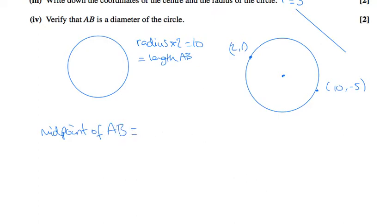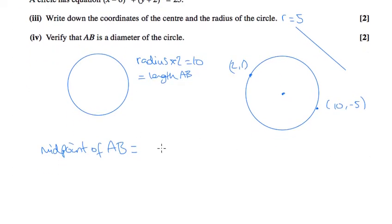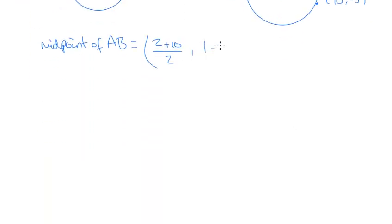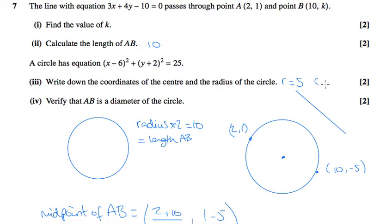And to find the midpoint of a line, we add the x coordinates up and halve them. So that will be 2 plus 10 over 2, and 1 plus -5 over 2, which will come out at 6 and -2, which is exactly what we want. And that's what we had before, we had that the centre was 6, -2. So it does all fit together.